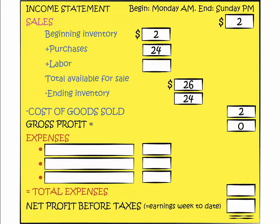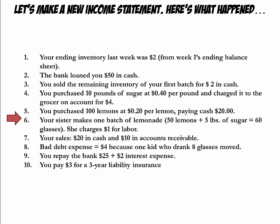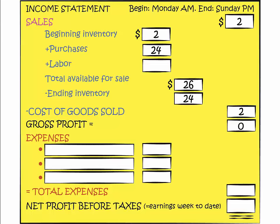The $24 in purchases brings total available for sale this week to $26, $2 of which you sold earlier. Your sister charged you $1 for labor to make the lemonade. The $1 labor charge gets added under inventory because it is a cost related to manufacturing your goods. The value of the labor is tied up in the finished goods — the batch of lemonade your sister made — and it should not be expensed until we sell that batch. This brings the value of total available for sale up to $27.